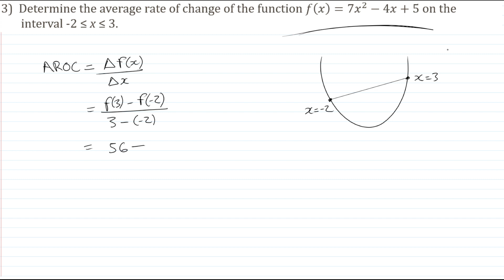And if I sub -2, I get 7 times (-2)² minus 4 times (-2) plus 5, and that gives us 41. In the denominator we have 3 minus -2, and that's 5. So 56 minus 41 gives us a nice value of 15, and when we divide that by 5, we get a value of 3. And that is our average rate of change on the interval -2 to 3.